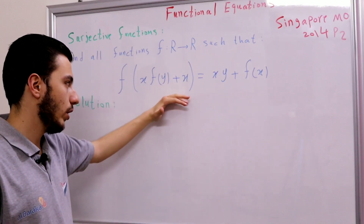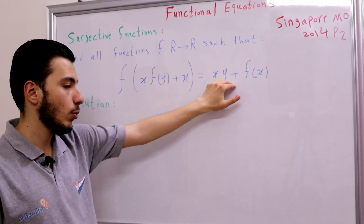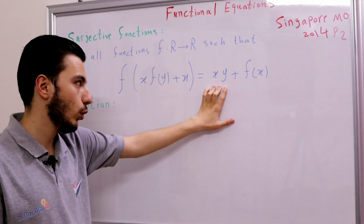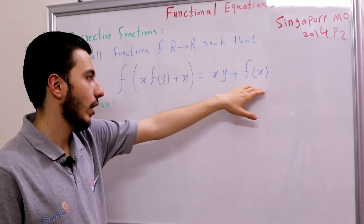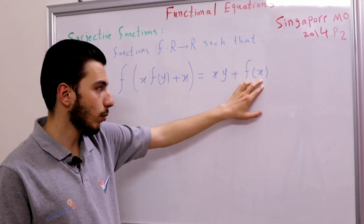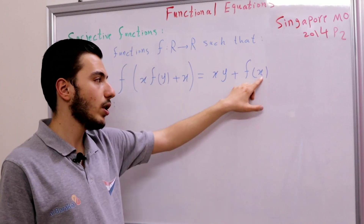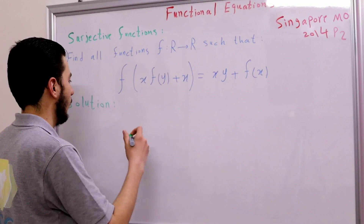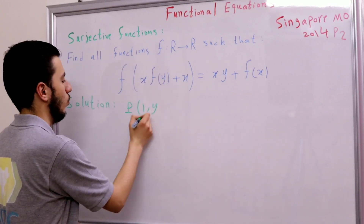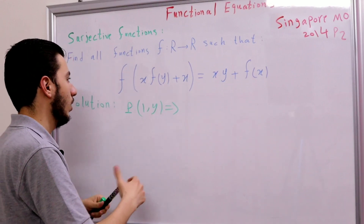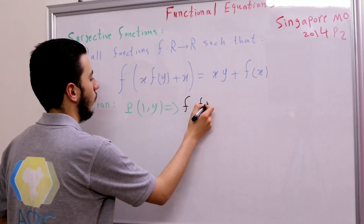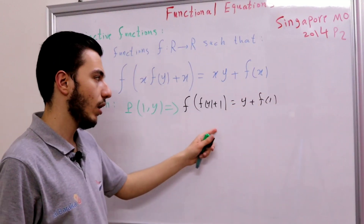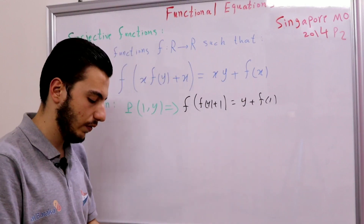The first thing we notice when looking at this functional equation is the x·y term — those are free quantities. So we should immediately think of surjectivity. Can we prove that our function is surjective? We have f(x) here, and f(x)·f(y) + x here, so we can make this constant by substituting x with 1. If we substitute x with 1, we get f(f(x) + 1) = y + f(1), so f of something equals a surjective quantity, which means our function f is surjective.